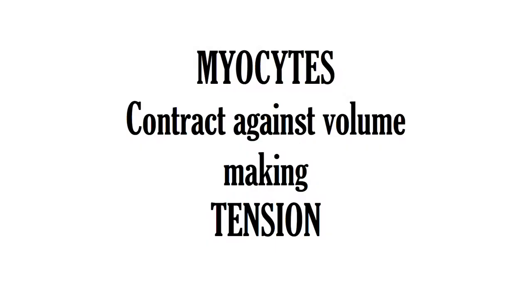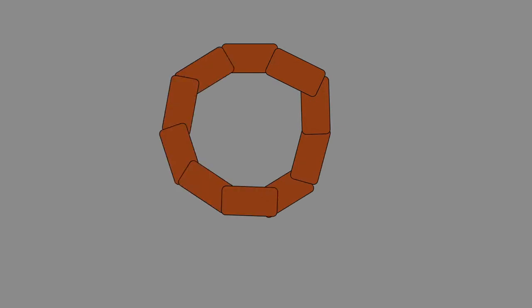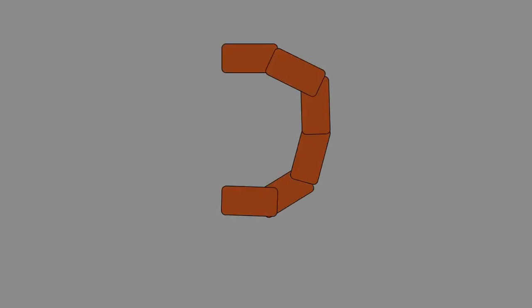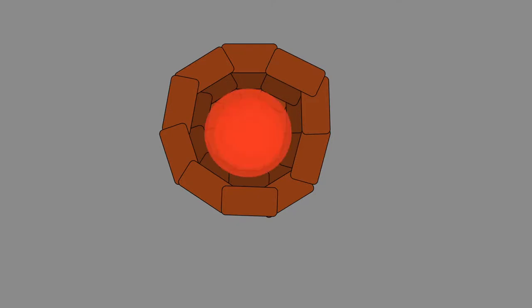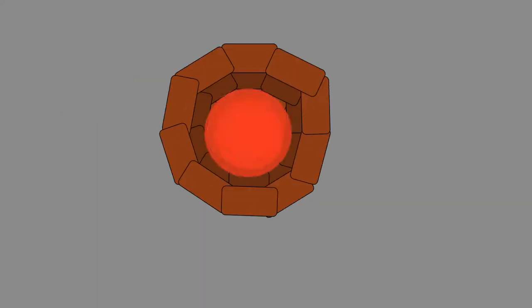If we consider a horizontal cross-section through the left ventricle, we see something that looks like this — ignoring that the ventricular myocardium is more than just a single cell layer thick. We see the myocytes joined end-to-end, and we can imagine that with their contraction, as they're forcing blood out of the heart, there's a tension being generated in those cells.